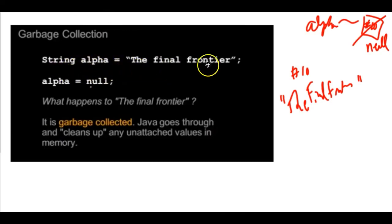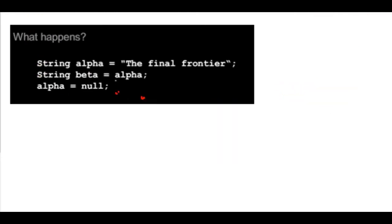If we were to use that and say we created string alpha, the final frontier, and then we assign alpha null. What happens is the string, the final frontier, gets garbage collected. Java comes in and gets rid of any objects that don't have a reference to them. So, if we have this object that is floating around in memory and has no tag on it, no alpha tag, then it gets thrown away. And Java does that constantly. It's constantly collecting the garbage.